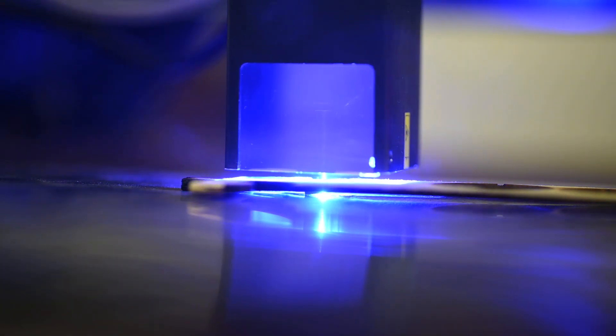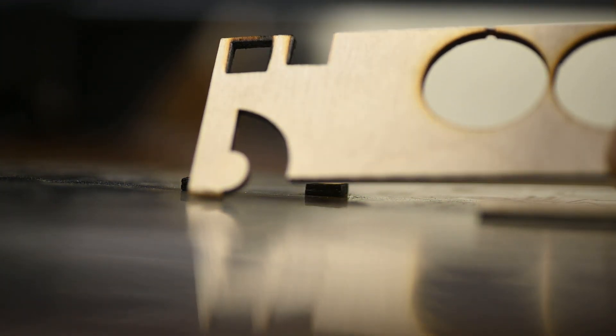This is the sheet it comes with to protect the cutting surface. This is a speed of 5 and a power of 80, cutting through 3 millimeter plywood. We had a couple of small flames there. Definitely not safe.